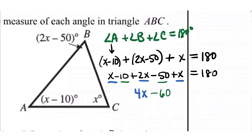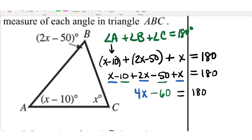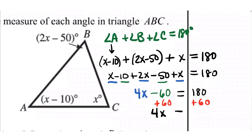That is a skill that sometimes has a way of getting away from us, so if you're having any trouble with positive and negative numbers, you can ask me about that. We want that x by itself, so I'm going to begin by adding 60 to both sides of the equation, and we get 4x equals 240. Then divide both sides by 4, so x is equal to 60 degrees.